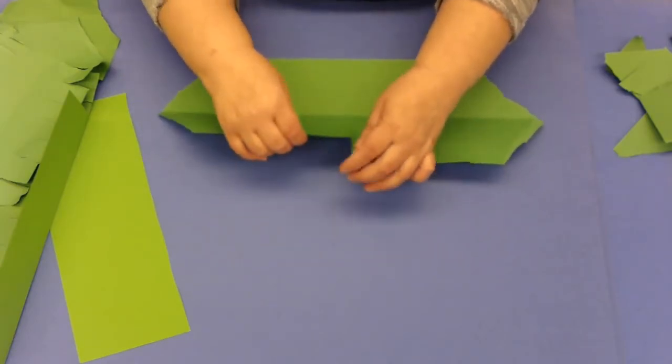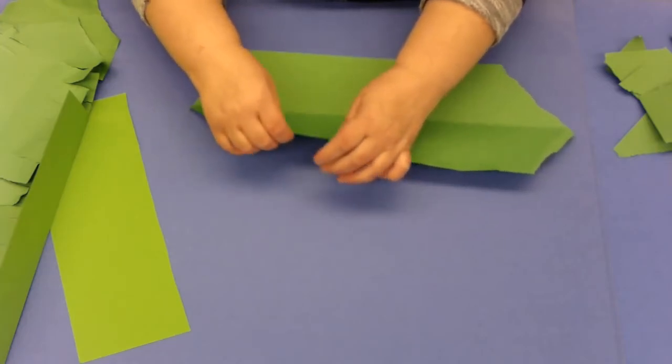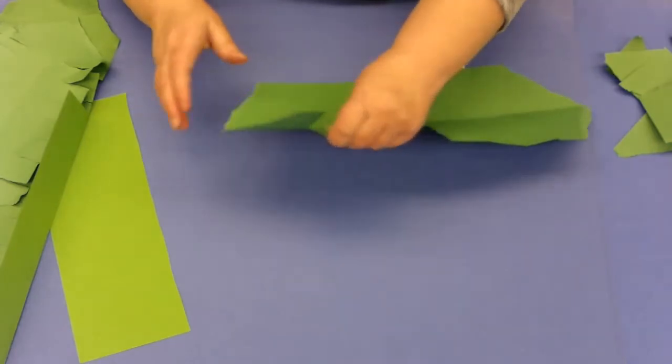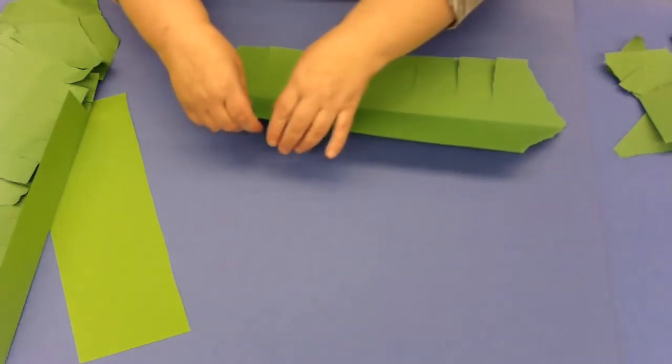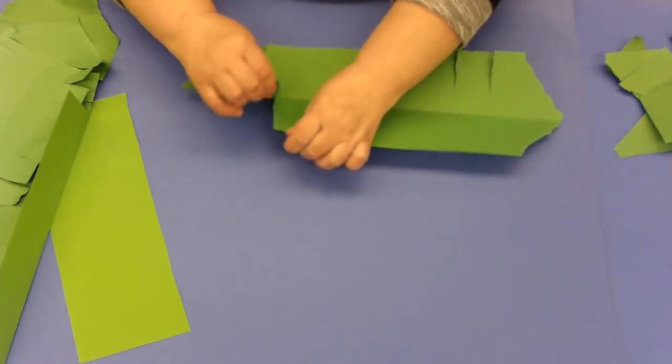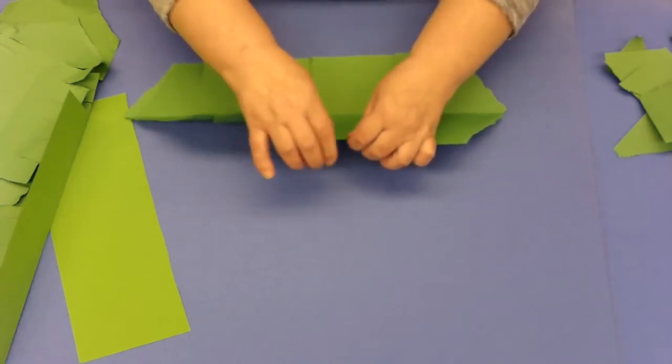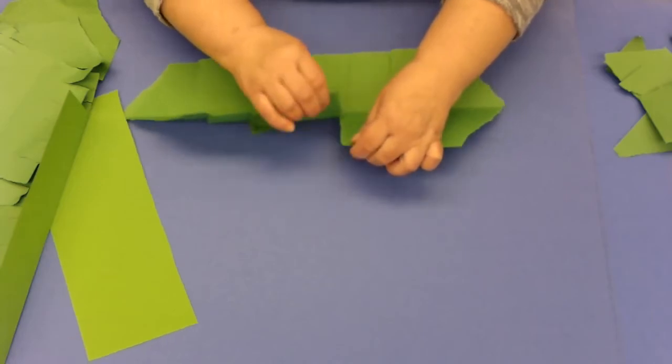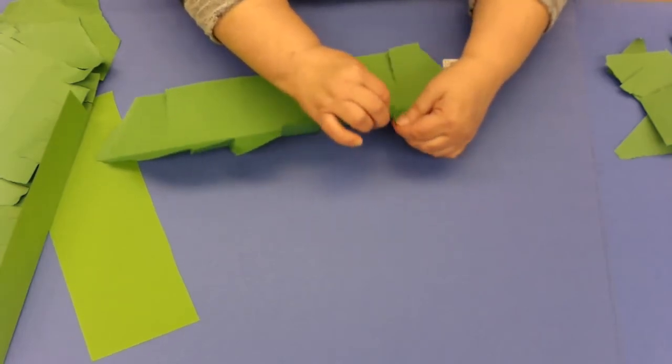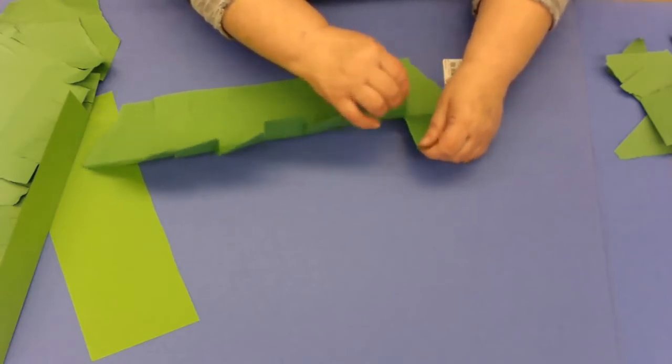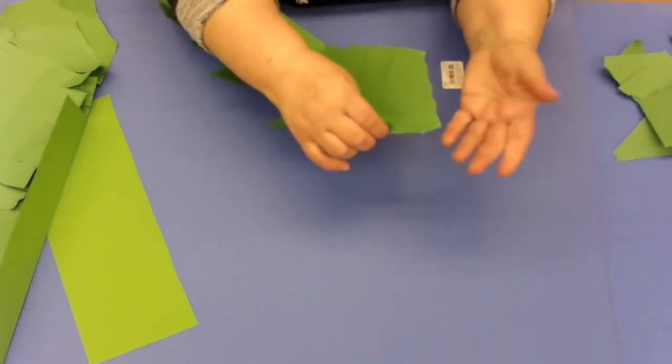If you tear your leaf in half, it's okay. It's a piece of paper. You absolutely are not going to have any problem because you made a mistake. Mistakes happen. Sometimes they're happy accidents. I always call these leaves happy accidents because sometimes we do make those little accidents and we actually find out that it makes a cooler looking leaf.